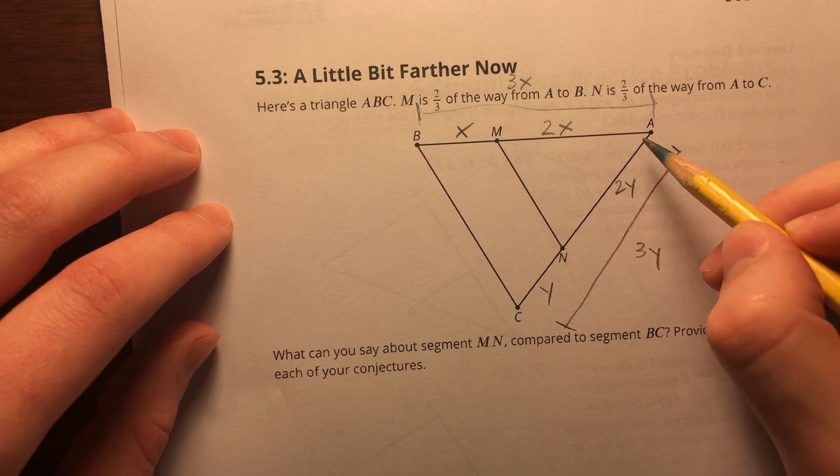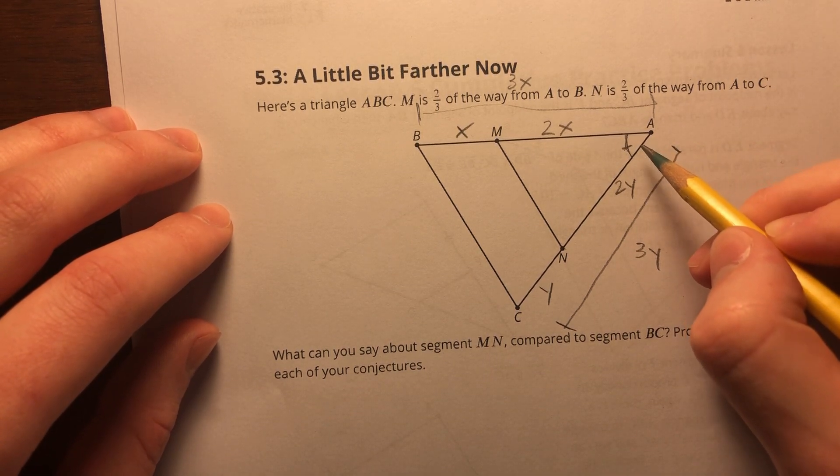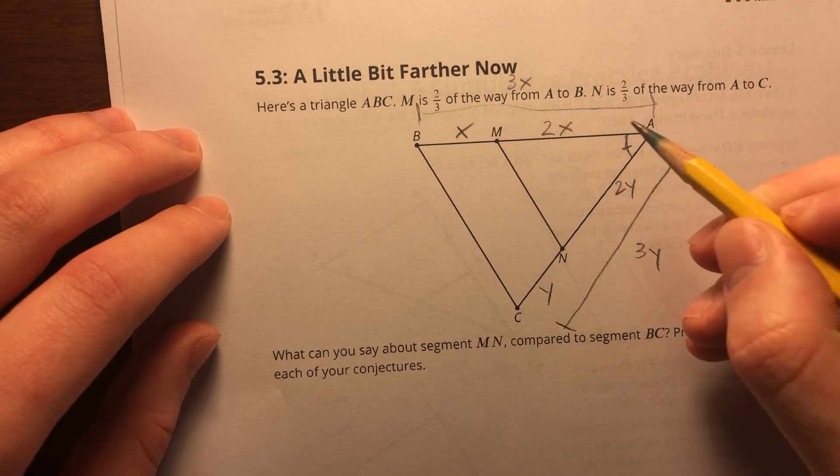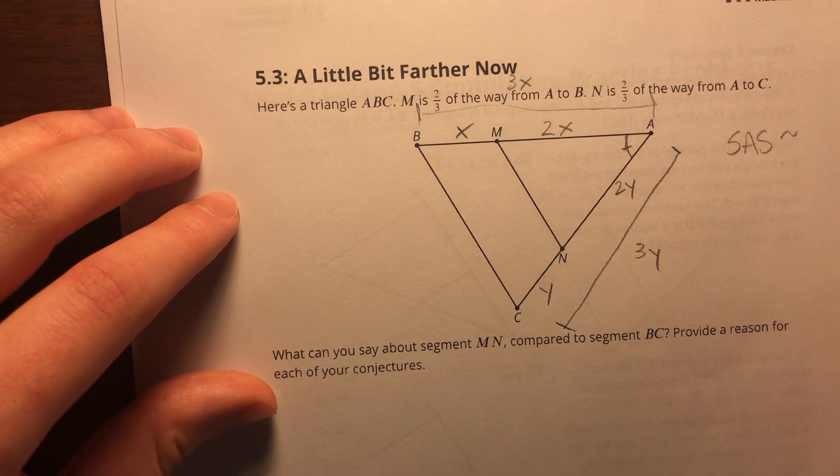So using the same method we used before, I know that this angle A is congruent to itself by the reflexive property. So I've got two triangles here that are similar. Why are they similar? Well, that would be side, angle, side similarity.